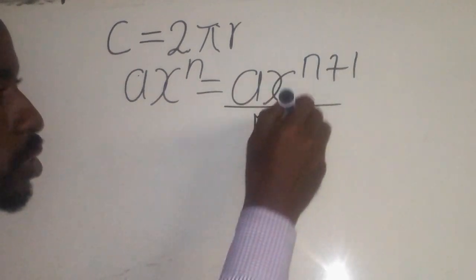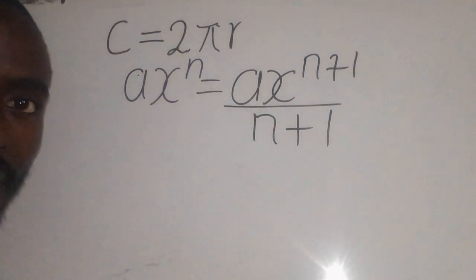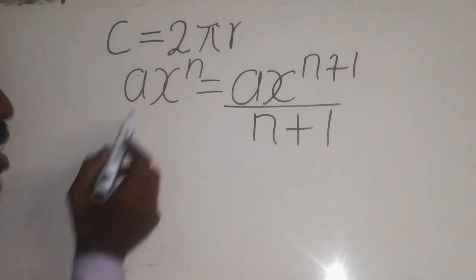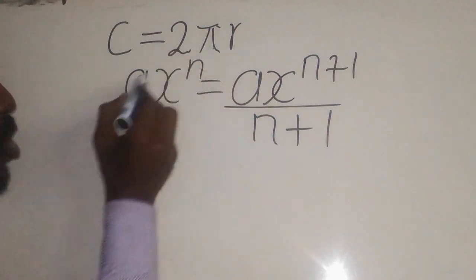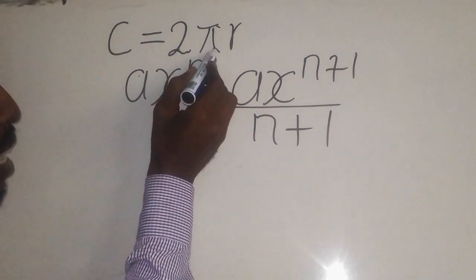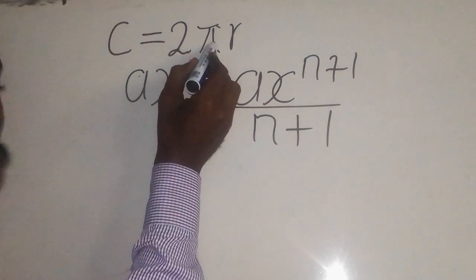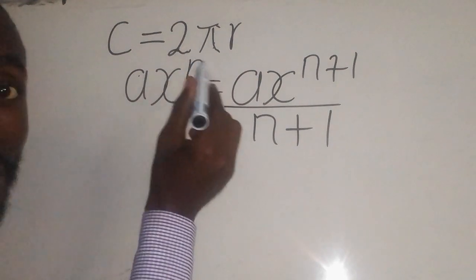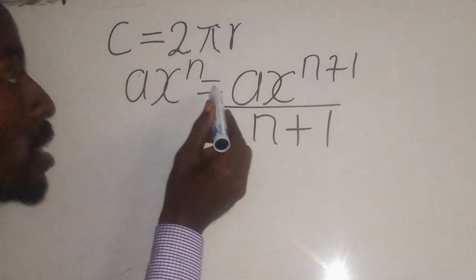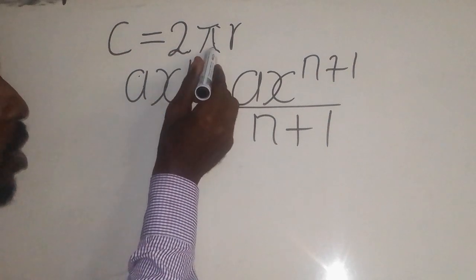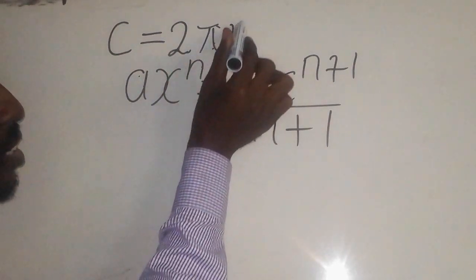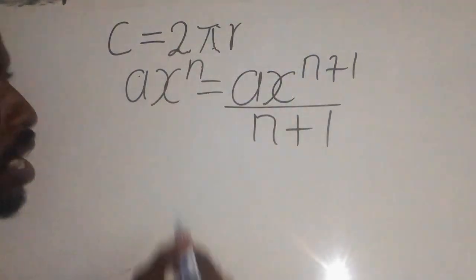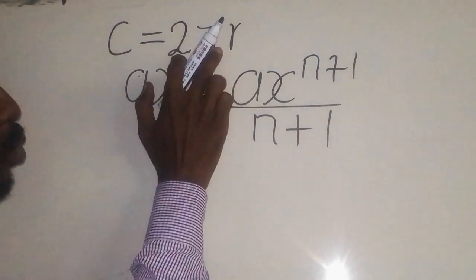In this case, the 'a' you are seeing here represents 2π. So a is 2π, where π is 3.142. The x represents r (radius), and n is representing an invisible one there. So a represents this, x represents r, and n is one.